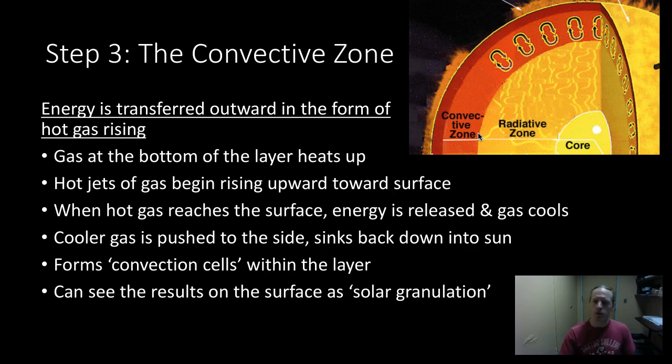So the next layer, the convective zone. Once those photons finally reach this layer, now what happens is, the gas becomes low enough in density and pressure that finally, the energy starts to flow faster. Specifically, what happens is, the energy that's coming up through the radiative zone heats up the bottom of this layer here. And then, that causes the gas to begin rising, because hot gas rises. That's true on the Earth, it's true in the sun. As the photons heat up the bottom layer of the zone, we start to develop these jets of hot gas rising up to the surface.